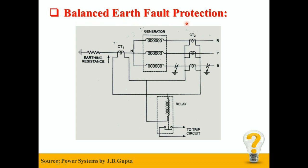Balanced Earth Fault Protection: The schematic arrangement of a balanced earth fault protection for a three-phase generator is shown in the figure. In this scheme, three line CTs — one mounted in each phase — have their secondaries connected in parallel with that of a CT mounted on the conductor joining the star point of the generator to earth through an earthing resistance. The protection is limited to the region between the neutral and the line CTs, and provides protection only in case of an earth fault, not in case of an external fault.